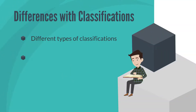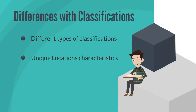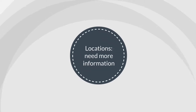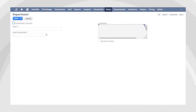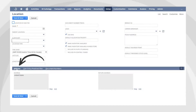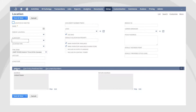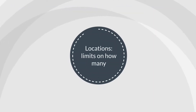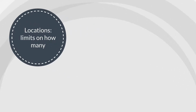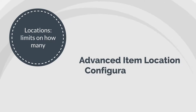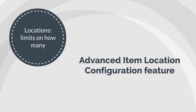Another key difference is that the locations classification differs from the other two in some ways. New locations require much more information when they are created. Where the other classifications just need to be named and associated with a subsidiary, a new location needs information like the address of the location, the type of location (store or warehouse), and the branch ID. You can also upload a logo for the new location and set the time zone. Additionally, while you can create an unlimited number of departments and classes, you would need to use the advanced item location configuration feature to create more than 1,000 location records.